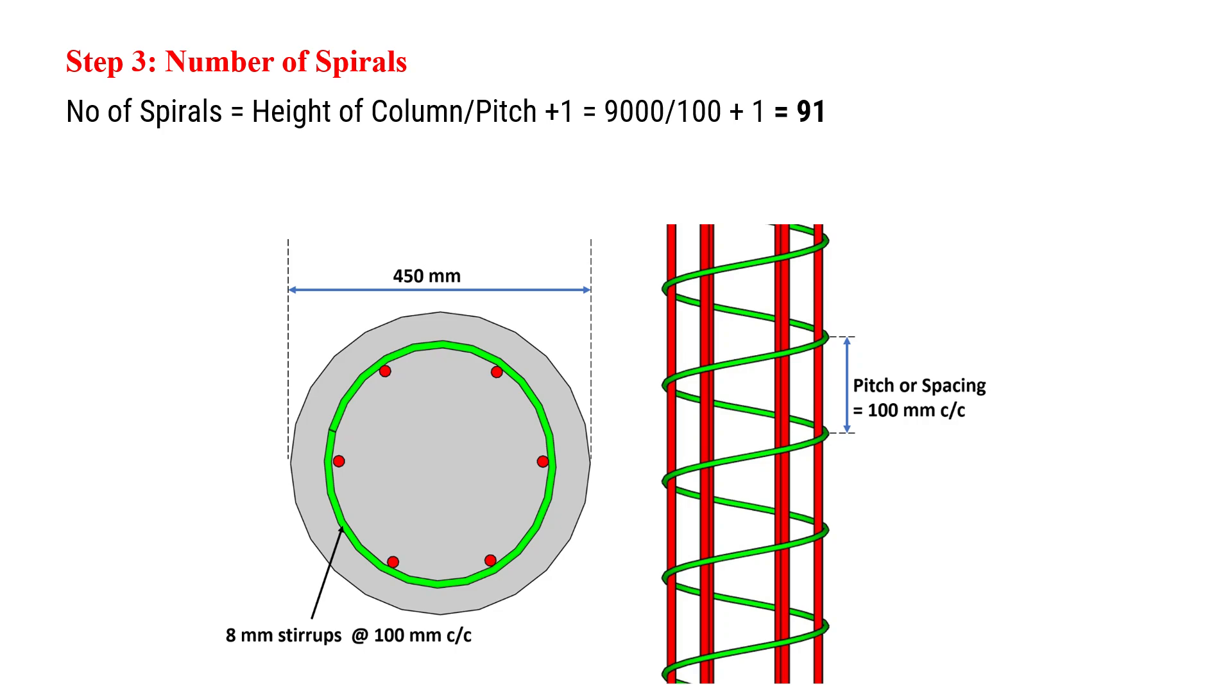Now, we calculate the number of spirals needed for the entire column height. Number of spirals is given by height of column divided by pitch plus 1.